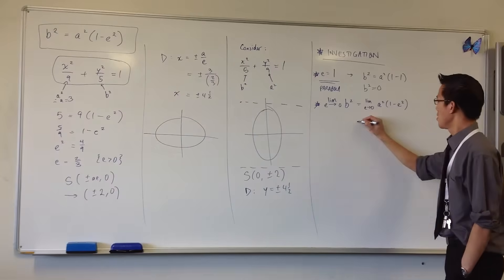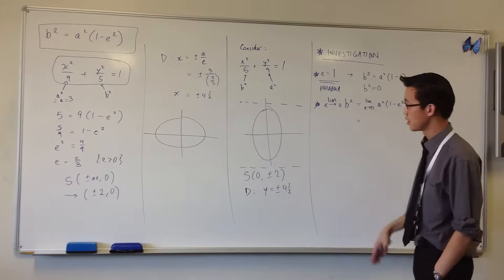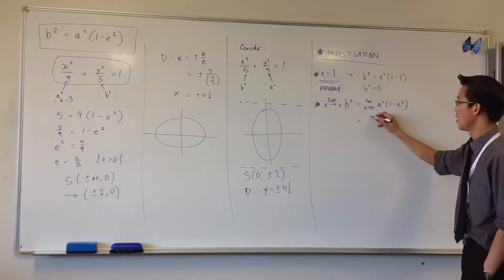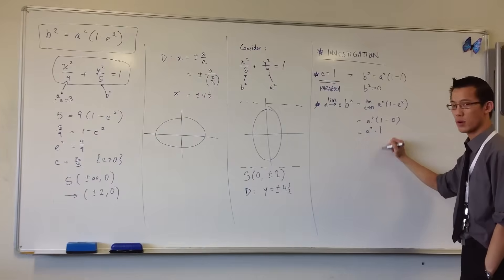So what happens here? Well, because unlike when we were doing this with first principles, this limit I can actually just evaluate it at zero. Right, I can say that's going to be a² times (1 minus zero), a² times one, which equals a².